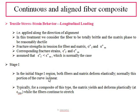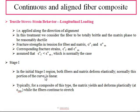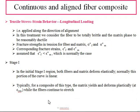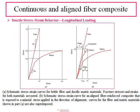The deformation occurs in several stages. In the initial stage — region one — both fibers and matrix deform elastically. This portion of the curve is approximately linear. For composites of this type, the matrix will yield and deform plastically while the fiber continues to stretch elastically.